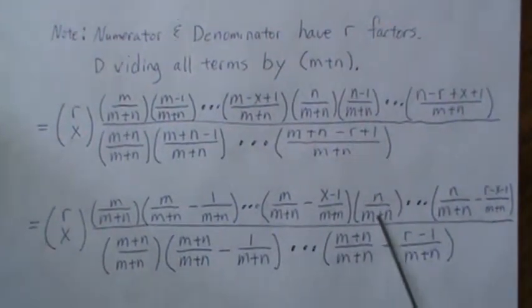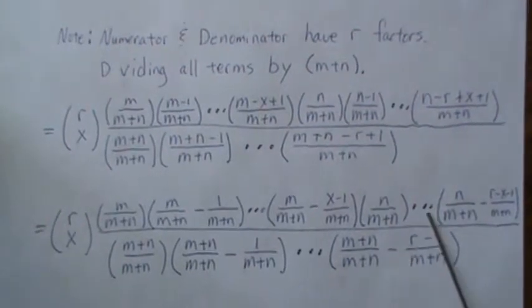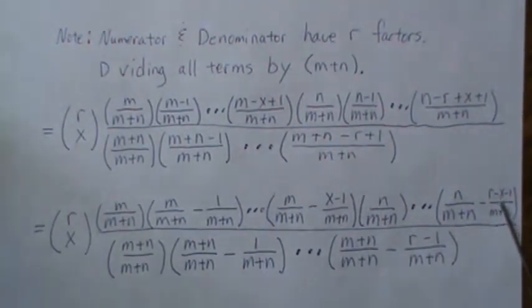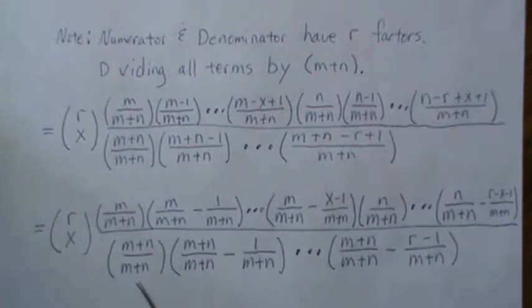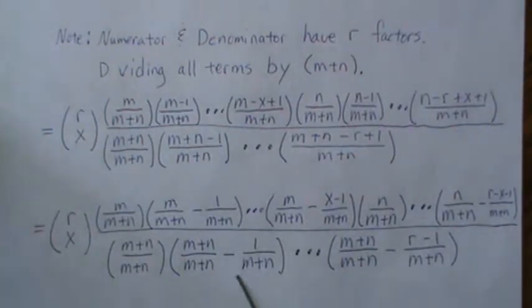The limit of that is p. And the limit of this is 1 minus p. And then as you go down, this piece here goes to 0 because the denominator dominates, and it goes to 1 minus p. And the denominator here, that's 1.